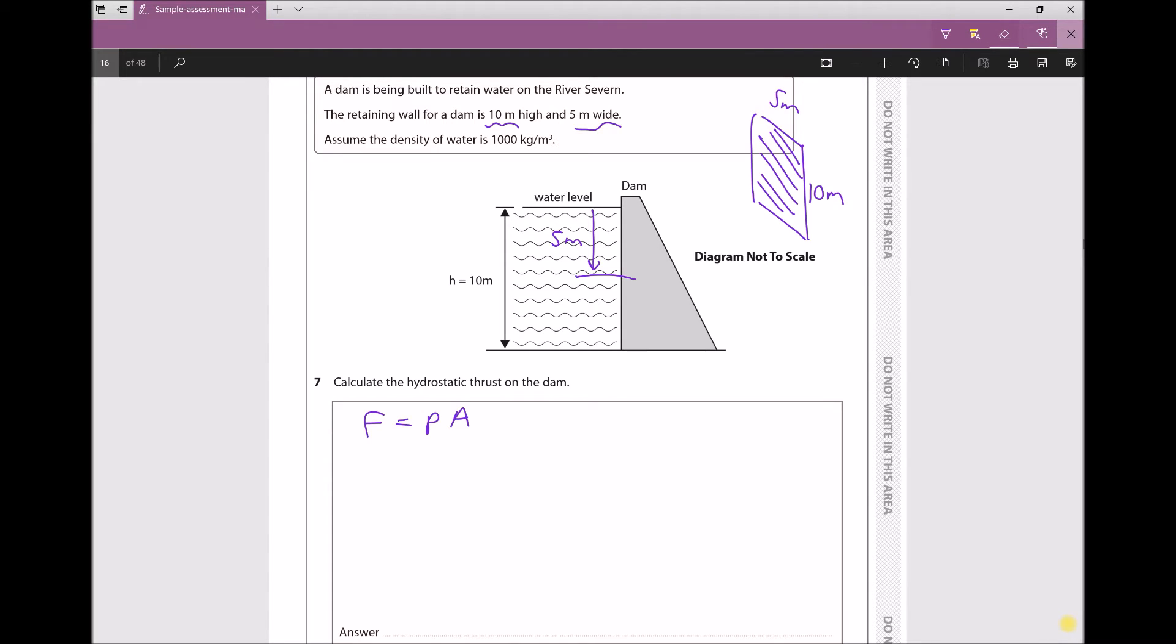The pressure that we're going to use needs to be the pressure at a depth of 5 meters, so x equals 5 meters. The reason we take the pressure at the midpoint is because the pressure at the free surface is going to be zero and the pressure at the bottom is going to be much larger. What we actually need is the average pressure, which is at the center, or at 5 meters.